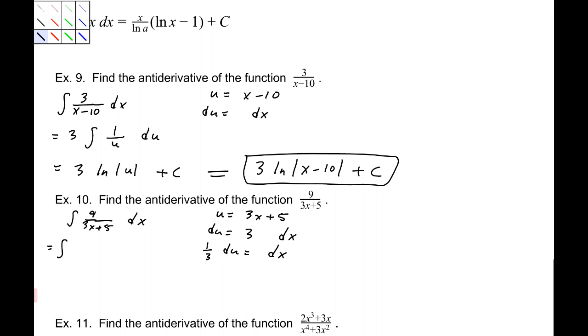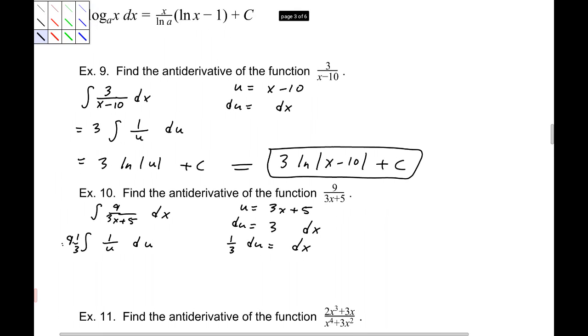So when I integrate this, first I'm going to bring that 9 out, 1 over u du. Now, that's not quite going to work, because I have that 1 third there. Let me bring that 1 third out. So I need to multiply 9, and I factored out, times the 1 third. So that will be 3 natural log of absolute value of u plus c, which will be 3 natural log of 3x plus 5 plus c.